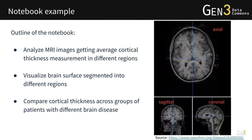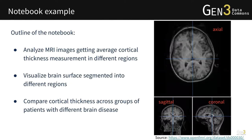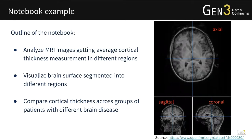Now let's look at an example of data analysis using a notebook. In this example, we analyze brain MRI images to get average cortical thickness measurements in different regions. We then visualize the brain surface segmented into different regions. Finally, we compare cortical thickness across groups of patients with different brain diseases. On the right is the raw brain MRI image visualized from the axial, sagittal, and coronal planes.